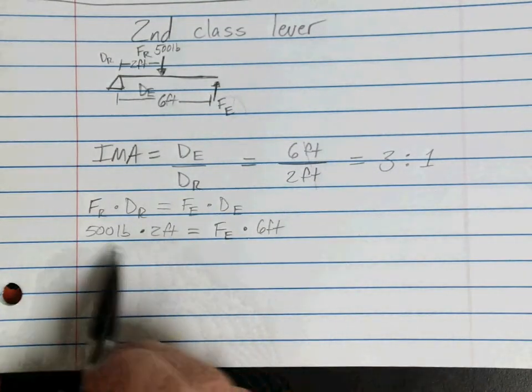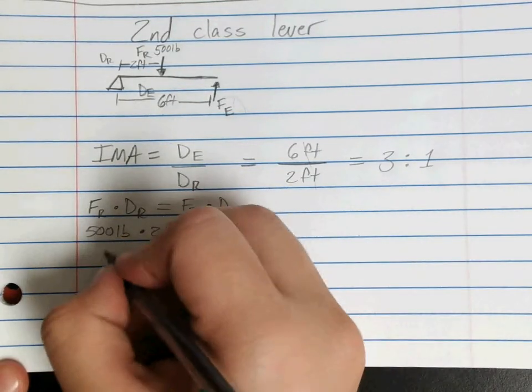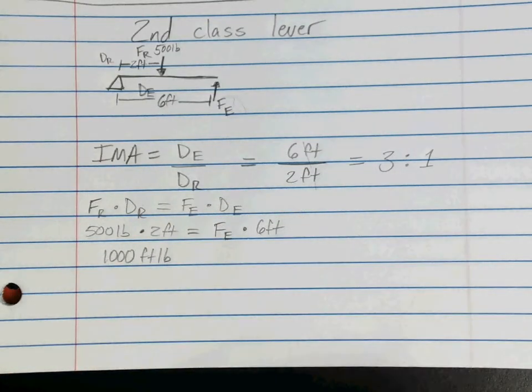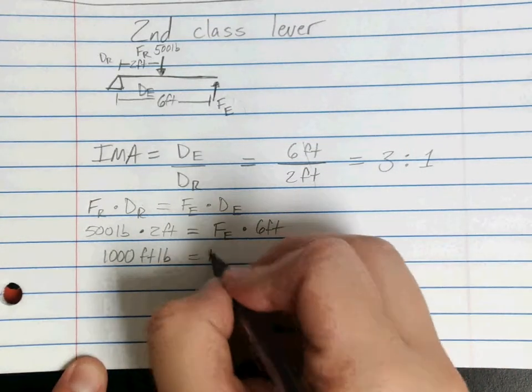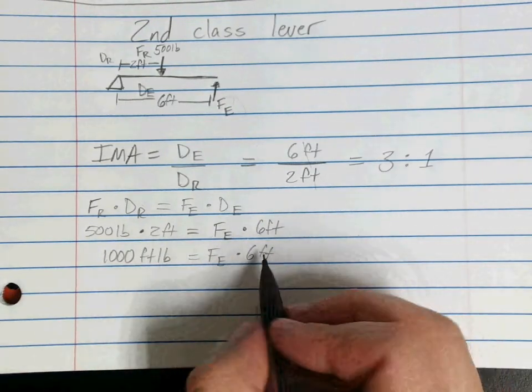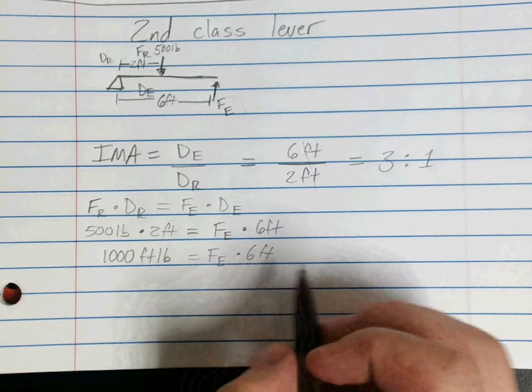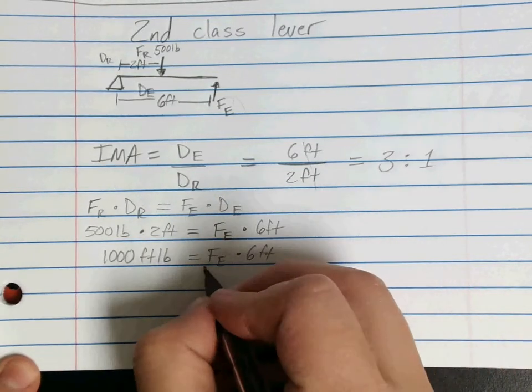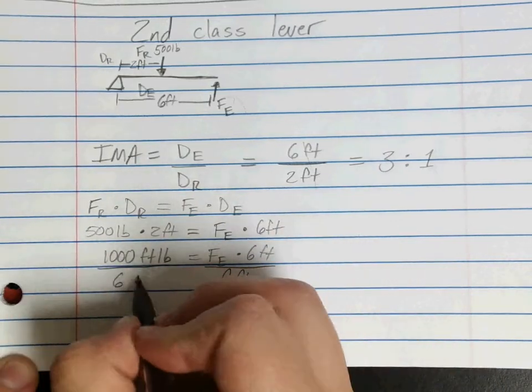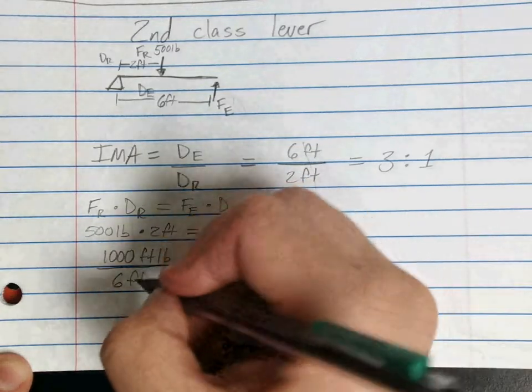Just like before, we want to simplify this side. So 500 times two, we're going to get 1,000. Remember to keep your units, so foot pounds for now, equals our FE times six foot. So to get FE by itself, we need to do the opposite of whatever's happening here. This is multiplied, so we need to divide by six feet on both sides. So this cancels, our feet cancels.